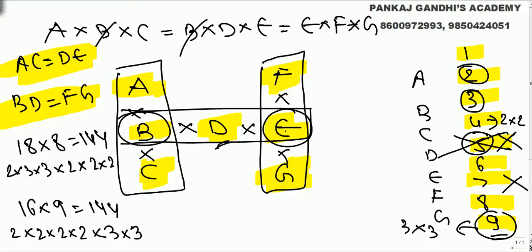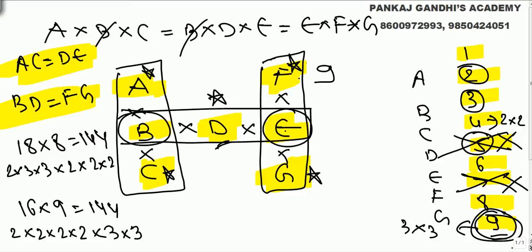Now, positions a, c, d, f, and g each appear in only one product. If nine is placed at one of these — say f is nine (three into three) — then e·f·g has two threes. But to get two threes in the other products using the remaining numbers like three and six is not possible, so nine cannot be at a single-product position.